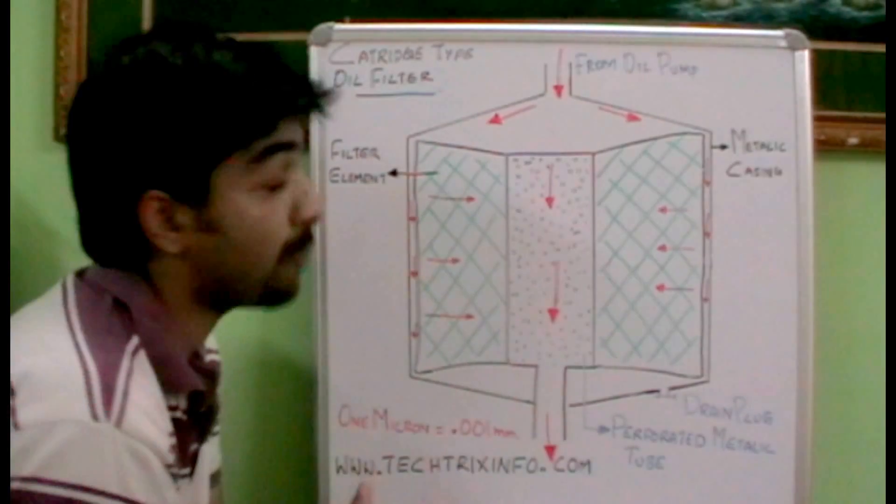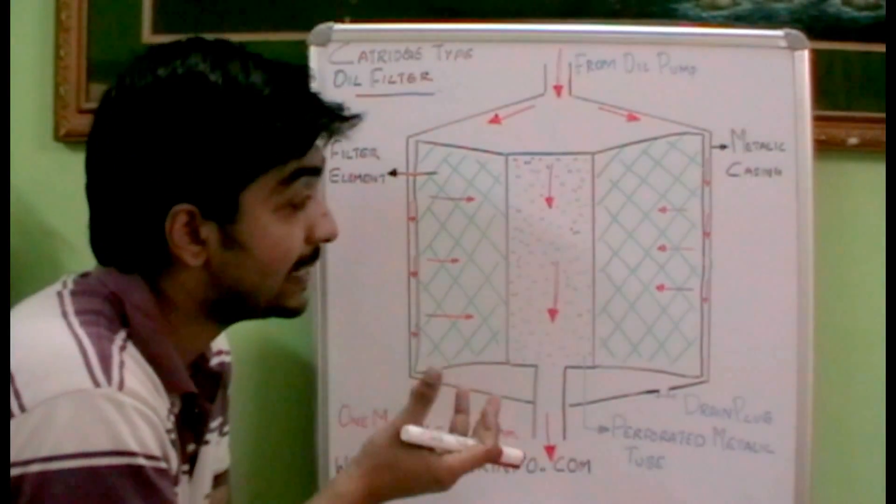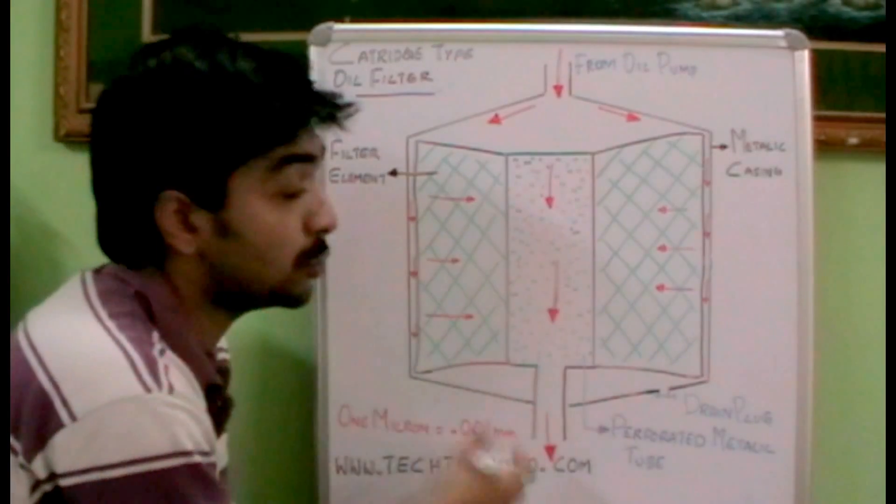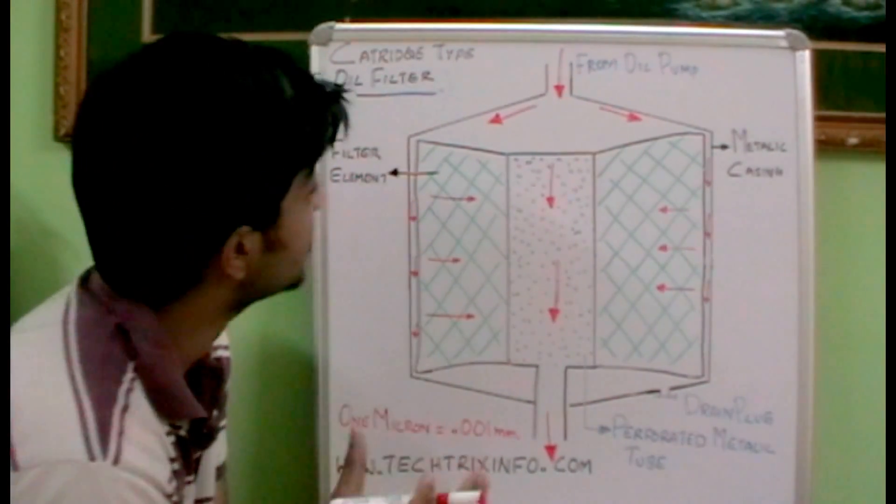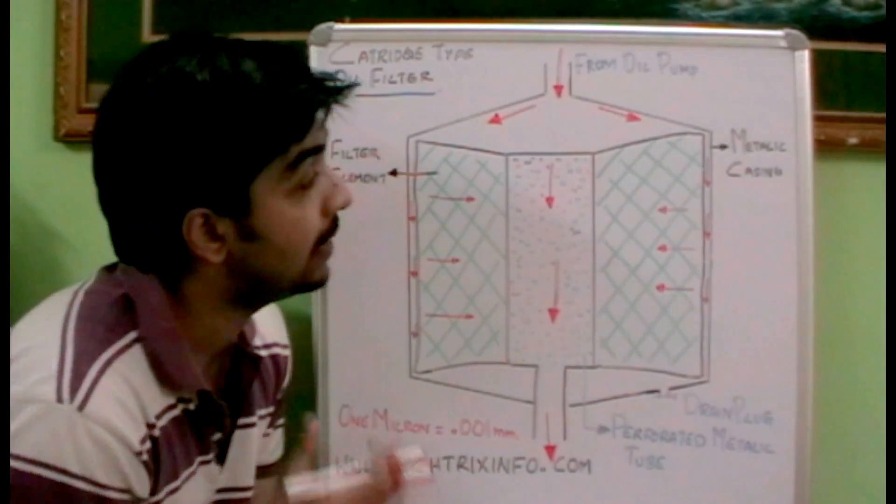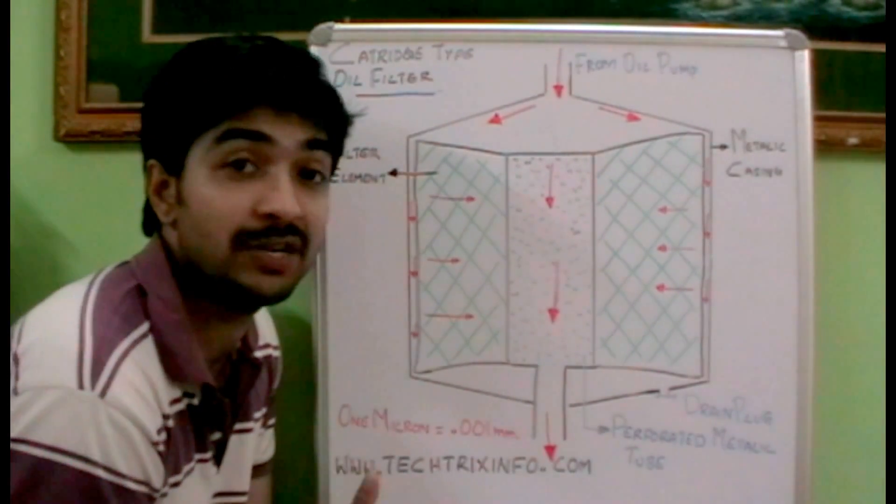So that's how a cartridge type oil filter actually filters the lubricating oil which is passing through this filter. I hope you understand how a cartridge type oil filter is working and how important it is in an automobile, machine, or an engine.